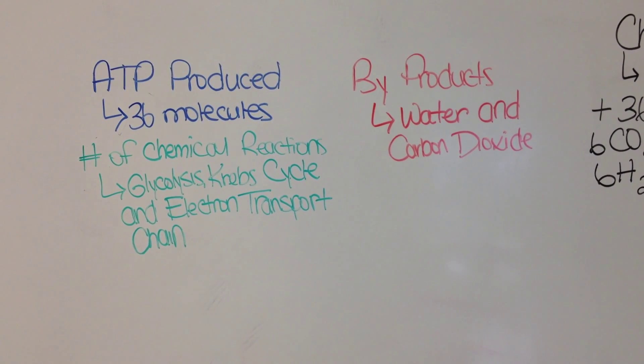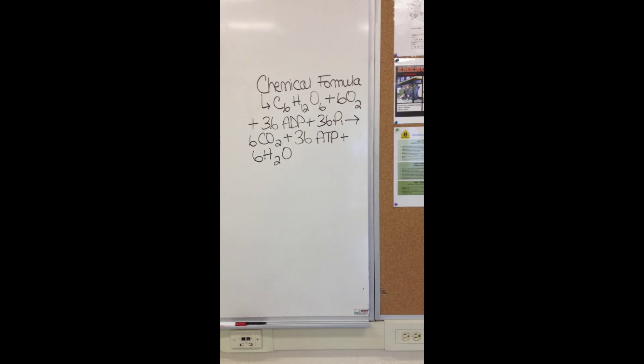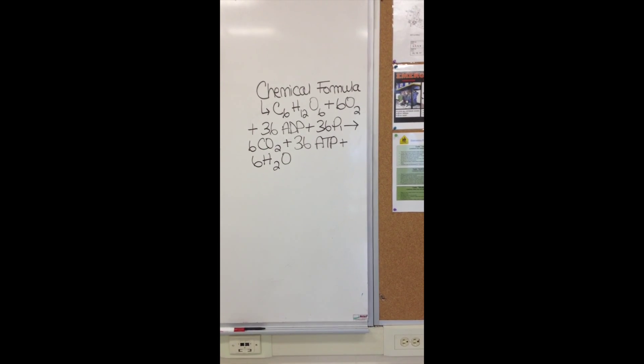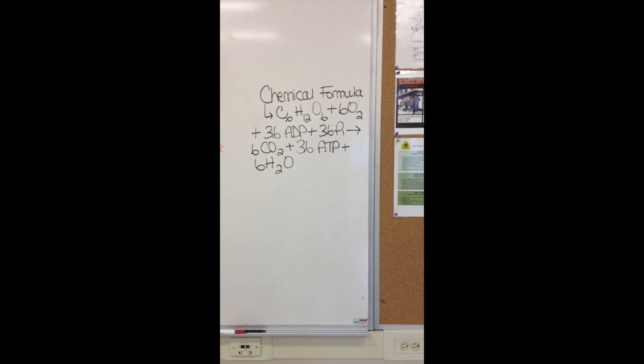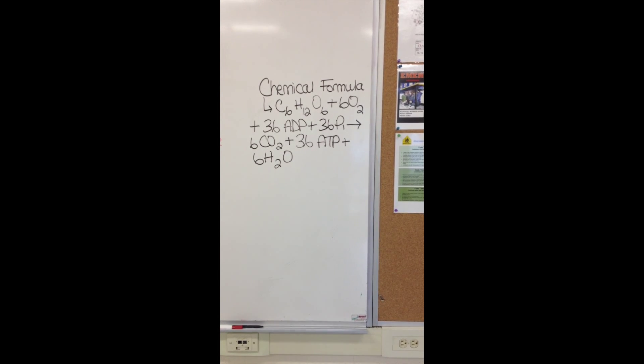The formula for cellular respiration is C6H12O6 plus 6O2 plus 36ADP plus 36Pi equals 6CO2 plus 36ATP plus 6H2O.